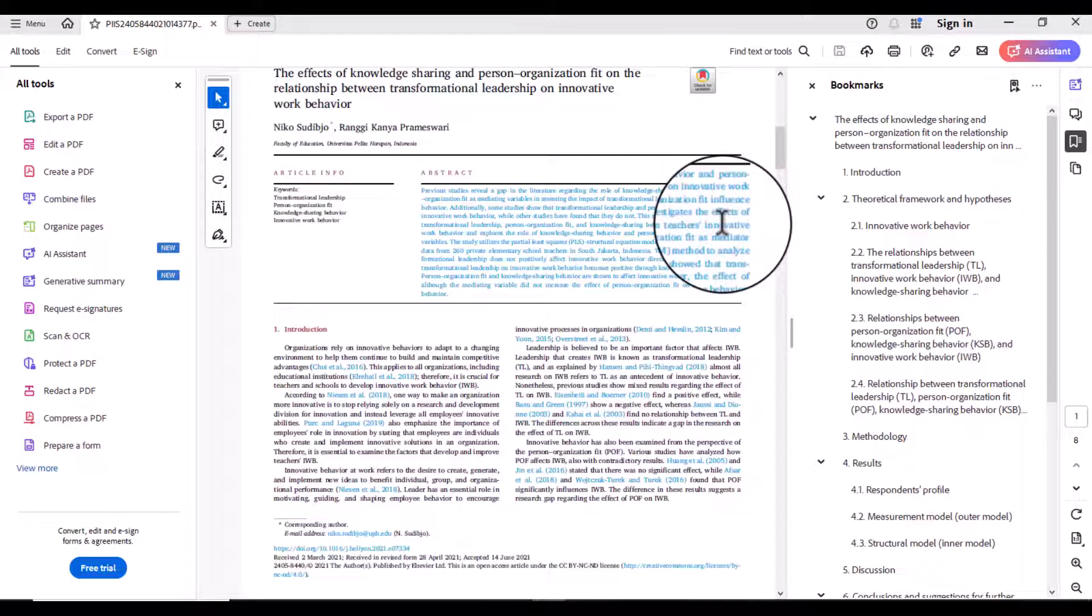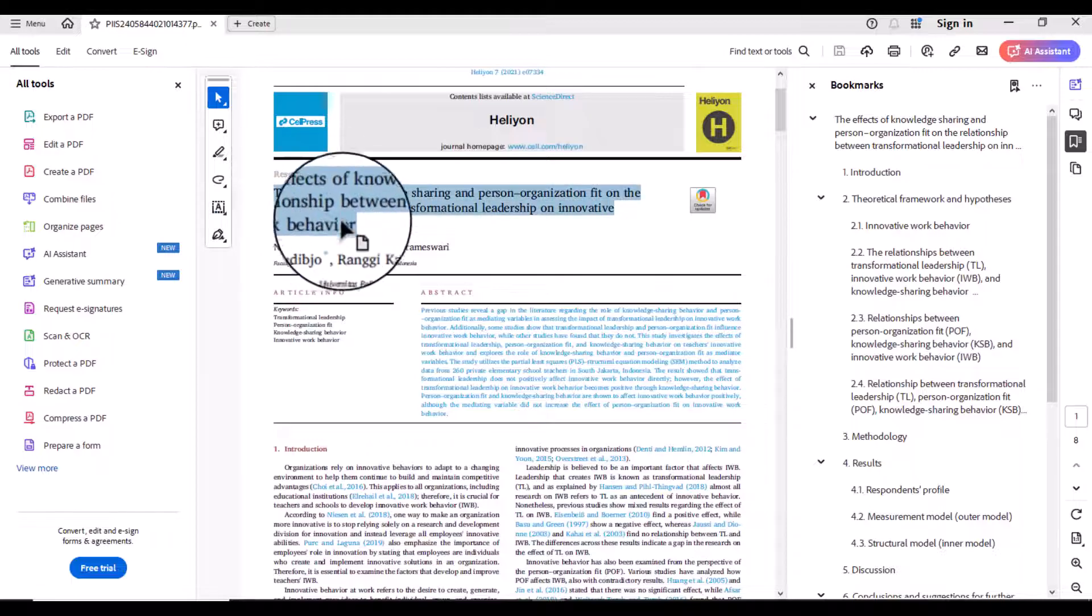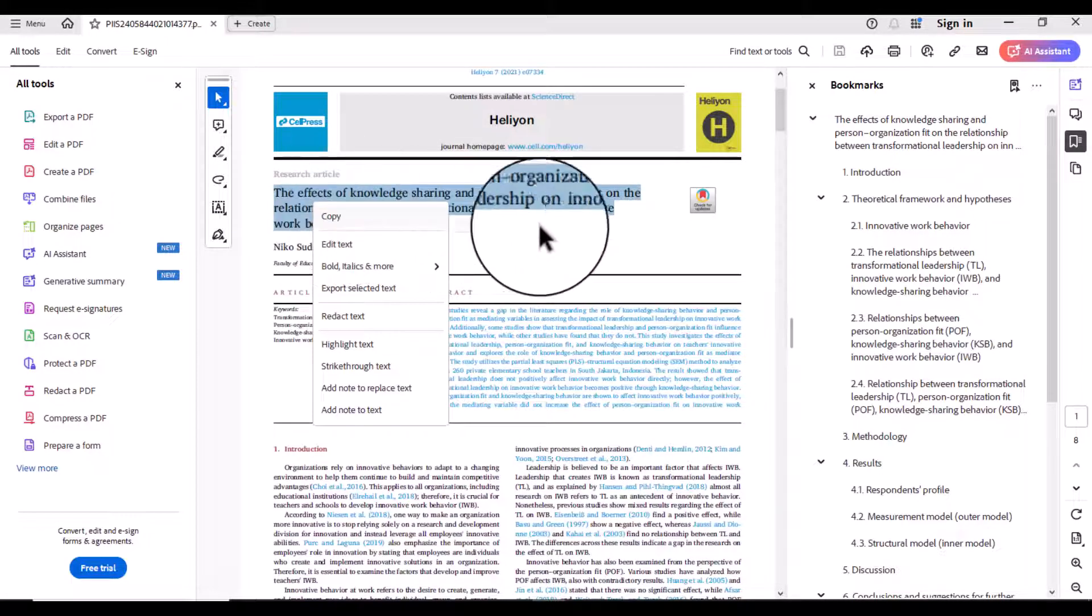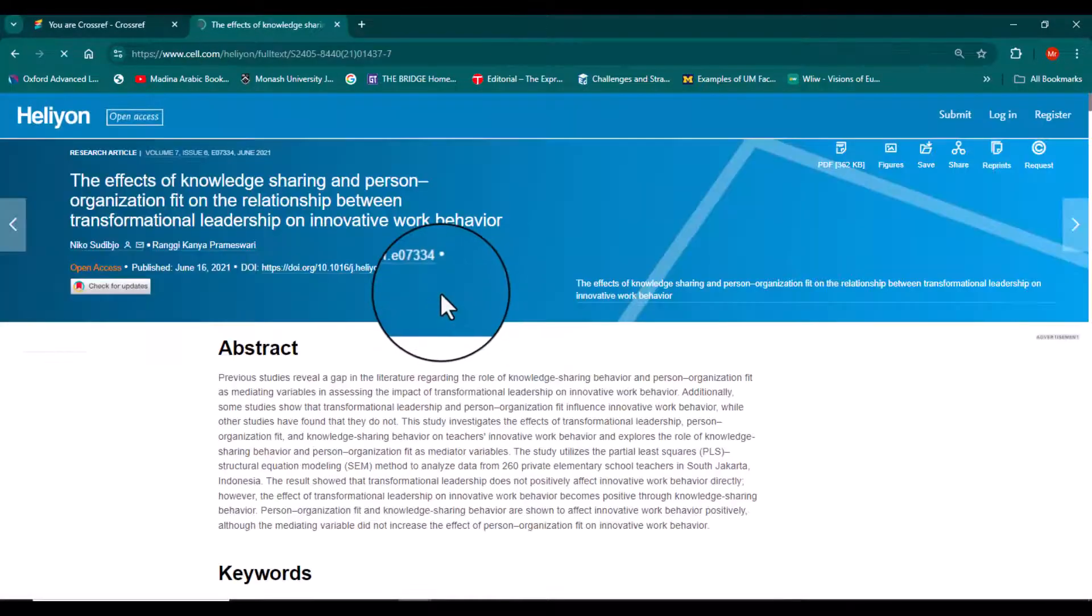The second strategy which you can use is to search the publisher's website. For instance, let me search out this article on the publisher's website. Let me open the publisher or the journal's website. Here you can see...